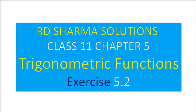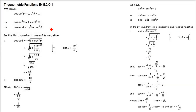This is R.D. Sharma solutions, Class 11th, Chapter 5, Trigonometric Functions, Exercise 5.2. Here one of the values of a trigonometric function is given and we have to find all the other values; the quadrant is also specified.